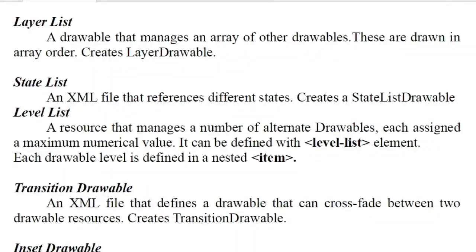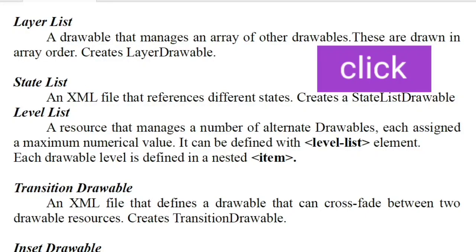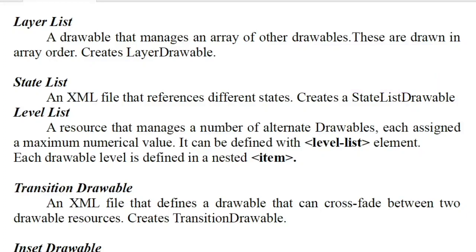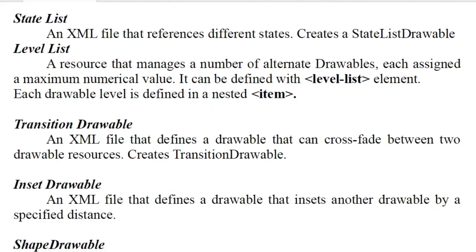The next type is a state list. If you want to create a new layer list and you click a button on your website and make a color change — if you click the button, you can choose an image or icon. In the application, by default, you can create a color image. If you create a state, you can represent different images in a drawable list. That's the state list.